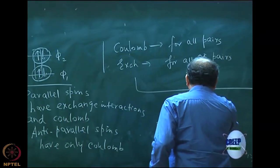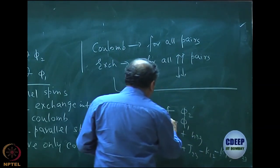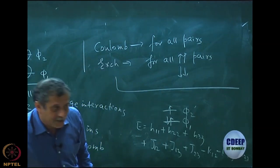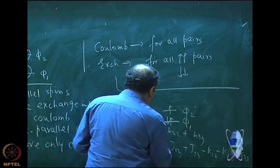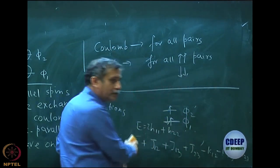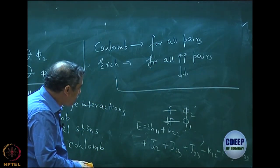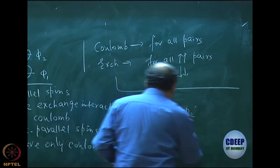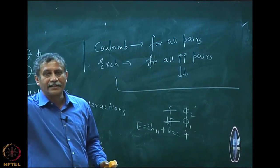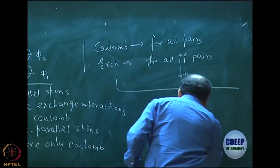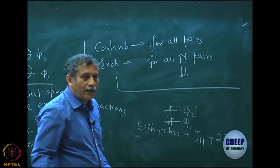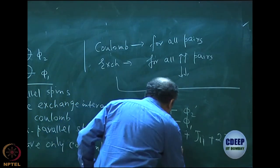Now change one electron: same 3 electrons but put in 2 orbitals — the lithium atom ground state doublet. The energy is 2H_11 plus H_22. Now rewrite Coulomb and exchange: all pairs have Coulomb. With 3 electrons there are 3C2 = 3 pairs. J_11 contributes once; the cross term gives 2J_12. There is 1 parallel pair, contributing minus K_12. So: 2H_11 + H_22 + J_11 + 2J_12 − K_12.